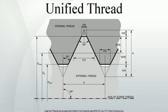Class 1 threads are loosely fitting threads intended for ease of assembly or use in a dirty environment. Class 2 threads are the most common. They are designed to maximize strength considering typical machine shop capability and machine practice. Class 3 threads are used for closer tolerances.